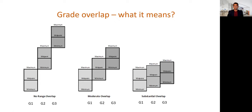If there is no grade overlap, everyone gets a dramatic jump in compensation every time they get promoted. By experience, companies have learned that there needs to be some overlap between grades because you can't always give very high increases, and employees need to see increases in the current job before moving to the next. Moderate overlap is always preferred over substantial overlap — because with substantial overlap, when people get promoted they don't see a meaningful change in compensation, which causes dissatisfaction.